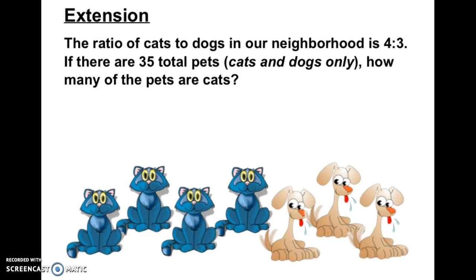Here's an extension. This is a typical problem where you have to make sure you're noticing whether you have a part-to-part or part-to-whole ratio, and you might have to go a little further. It says the ratio of cats to dogs in our neighborhood is 4 to 3 — that's a part-to-part ratio, comparing cats to dogs. But then it says there are 35 total pets, cats and dogs only, so now I'm looking at a whole.